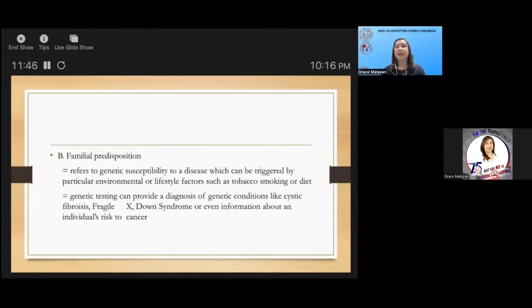What about familial predisposition? It is a risk factor for recurrent and severe disease. This genetic predisposition seems to be associated with anatomical, physiological, and immunological features. This refers also to genetic susceptibility to a disease which can be triggered by particular environmental or lifestyle factors such as tobacco smoking or diet. Genetic testing can provide a diagnosis of genetic conditions such as cystic fibrosis, Fragile X syndrome, Down syndrome, and even information about an individual's risk to cancer. If we find this family history, maybe we can offer genetic testing, which includes molecular tests, chromosomal analysis, gene expression, and even biochemical tests.